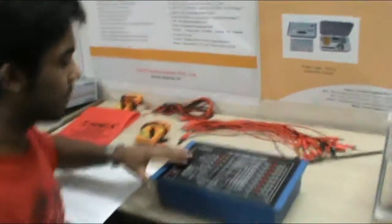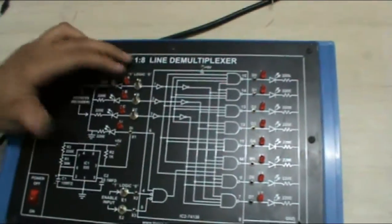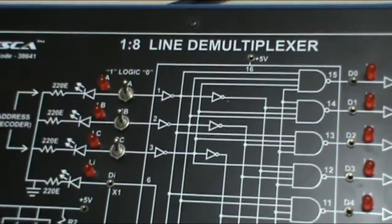Now this is our equipment in which these are the 3 LEDs for input S A, B, C and these are the 8 LEDs for the output from 0 to 7.